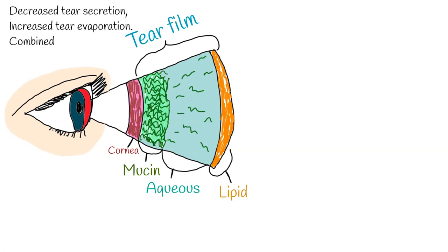Dry eye is clinically subdivided into two subtypes: one with decreased tear secretion, and one with increased tear evaporation. Commonly these two are combined.